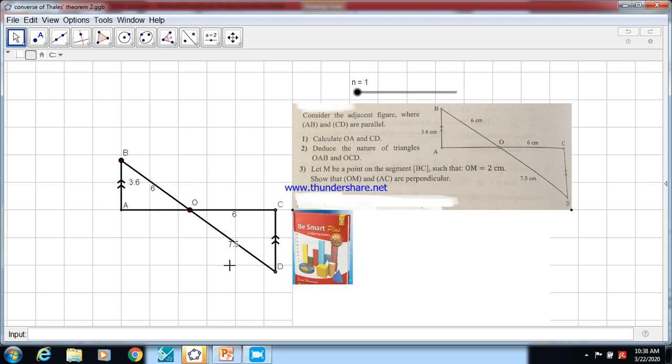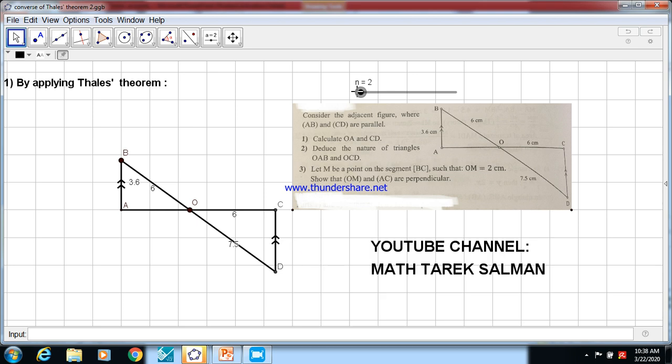I draw another figure here to represent this construction on dynamic geometry. So we need to calculate OA and CD. To do that, we have AB and CD are parallel, so we have to use Thales' theorem in the triangle. By Thales' theorem, we can write OA over OC equals OB over OD equals AB over CD. You see that we use Thales' theorem to calculate missing sides OA and CD.